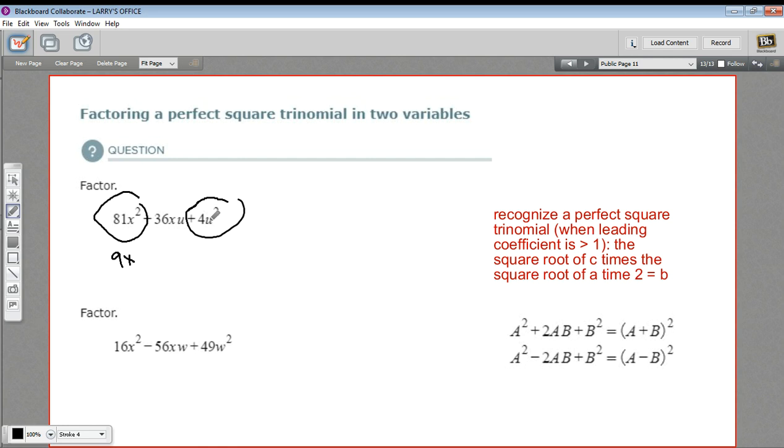The second, the square root of 4u squared, that's going to be 2u. And that could be positive or negative. We've got a positive sign in the middle, so this is all going to be positive. And to test if this is a perfect square trinomial, we multiply these together and then we multiply them by 2. So 9x times 2u would be 18xu times 2 would be 36. And look, we have a 36xu in the middle. So this is a perfect square trinomial.